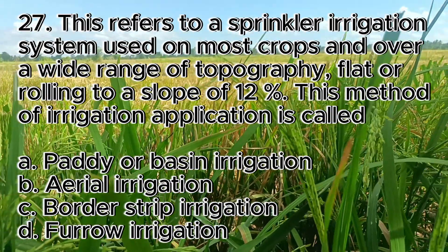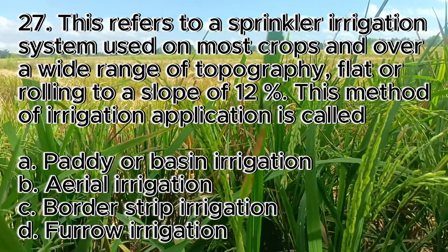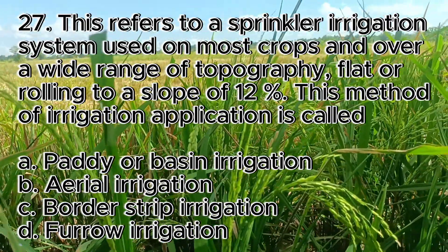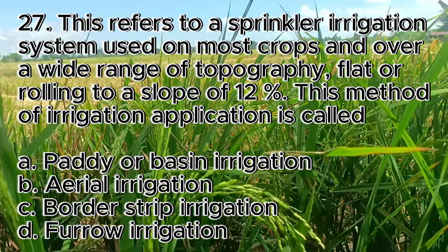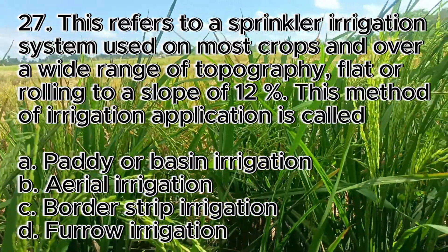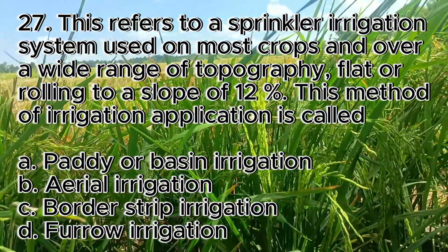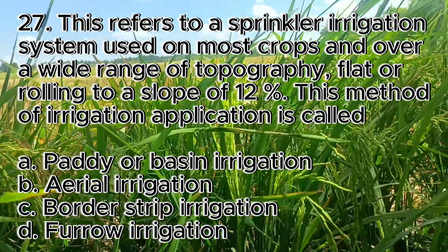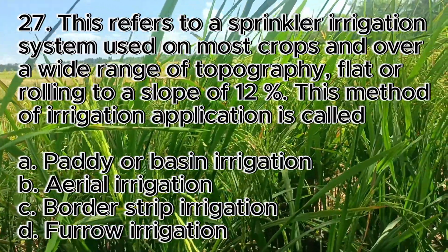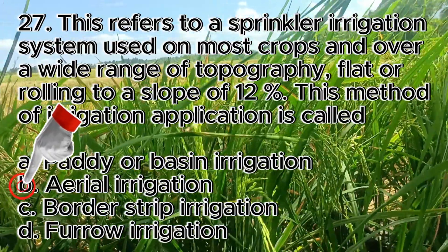Number 27. This refers to a sprinkler irrigation system used on most crops and over a wide range of topography — flat or rolling to a slope of 12%. This method of irrigation application is called? A. Potty or basin irrigation, B. Aerial irrigation, C. Border strip irrigation, D. Furrow irrigation. The answer is letter B, aerial irrigation.